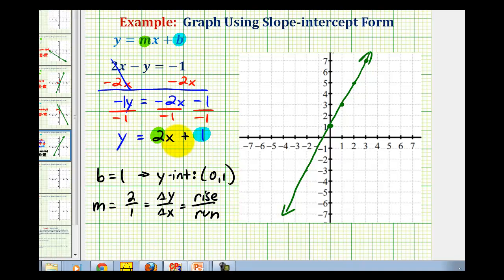Again, by solving this equation for y and putting it in slope-intercept form, we were able to identify the y-intercept of positive 1 and the slope as positive 2 over 1. So we went up 2 and right 1. We'll take a look at another example in the next video.